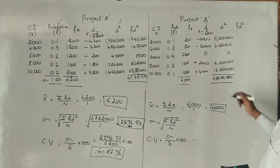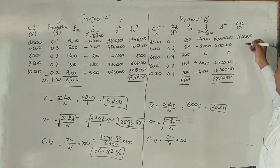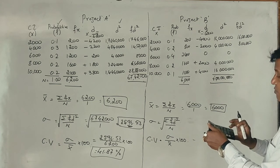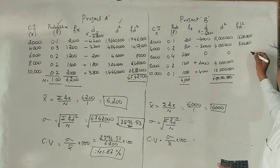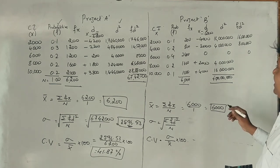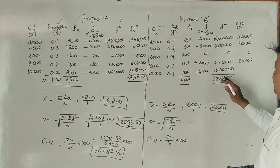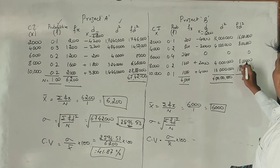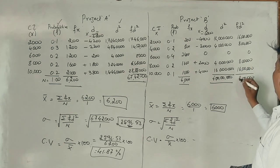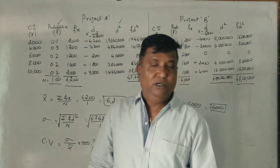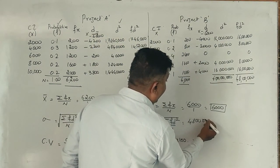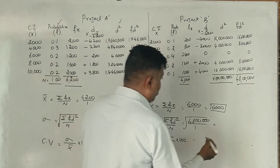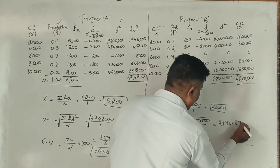F square calculations: 0.1 into 1 crore 60 lakhs is 16 lakhs. 0.2 into 4 crores is 8 lakhs. 4 into 0.2 is 8 lakhs. 0 into 0.4 is 0. 160 lakhs into 0.2 is 16 lakhs. Total is 48 lakhs.